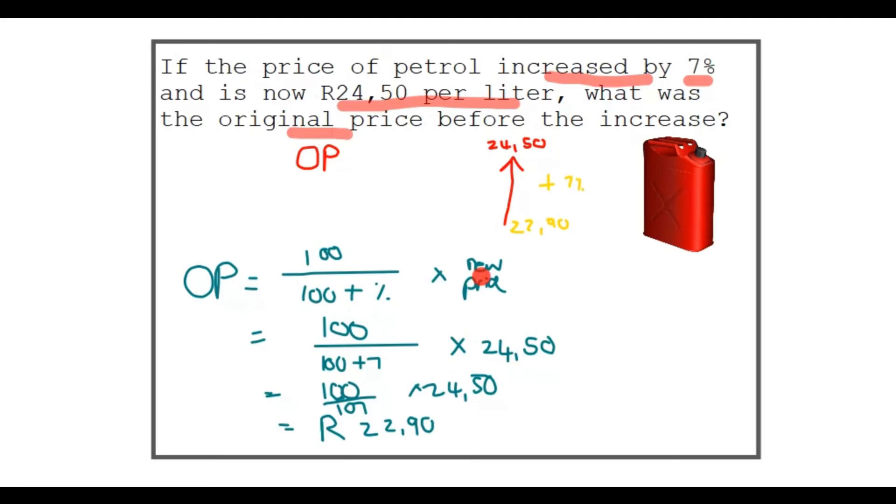So maybe you're wondering how do I get this formula? Looking at the example here, let's start off with something basic like finding the new price of something. Let's find the new price of the petrol. You would obviously use the full price plus then the 7%, another 7% of the old price.